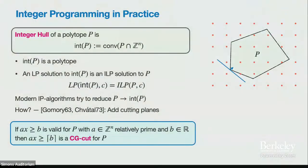If a is relatively prime, what happens geometrically is you take ax ≥ B and shift it upward to the nearest integer point — that's a CG cut. So CG cuts shave off corners of the polytope. You keep doing this until you get down to the integer hull.